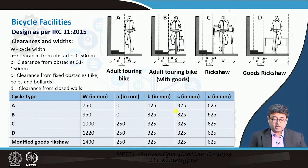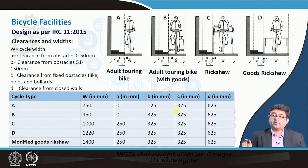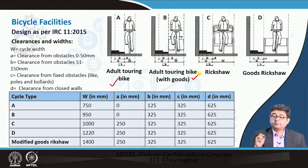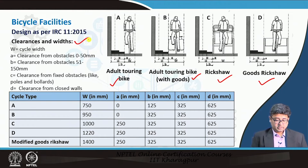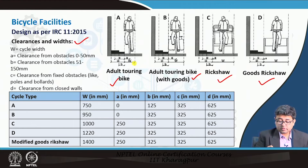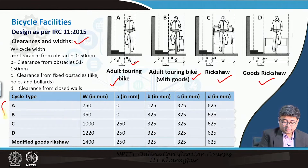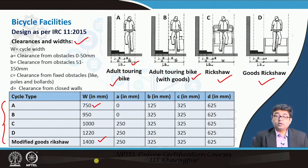As per the IRC guidelines, there are standard dimensions for different types of bicycles. IRC defines four different types: an adult touring bicycle, an adult touring bicycle with goods, a rickshaw, and a goods rickshaw. For each class, it specifies standard clearances and widths. The capital W is the width of the cycle itself, ranging from 750 millimeters to about 1.4 meters across the four classes.